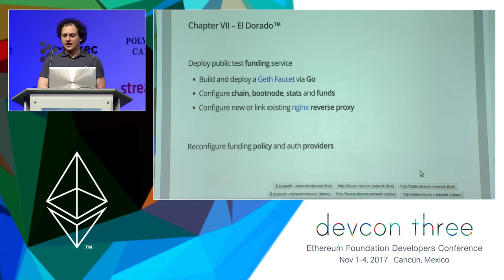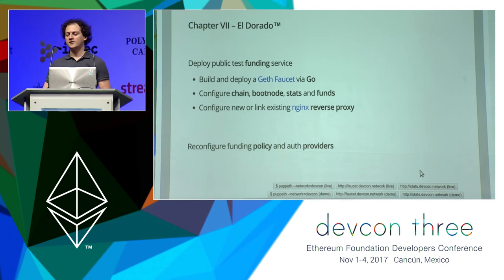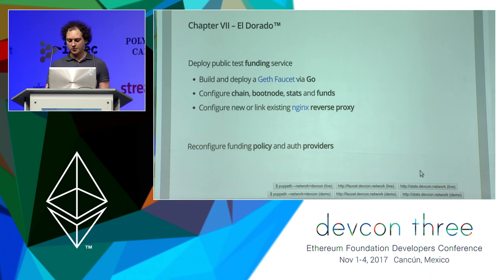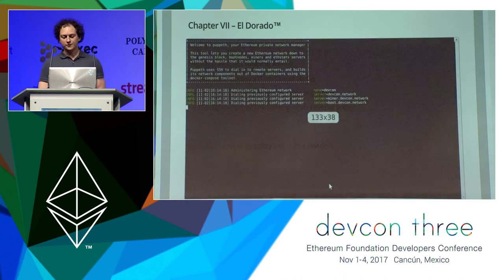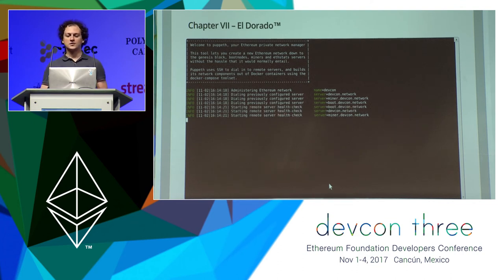Deploying all the components was easy enough. But if you share this with your friends, they'll say they want ether, and you'll be the one who has to give it to them all the time, which gets boring really fast. So we really need a faucet that just runs there and everybody can request ether. And to do that, GoEthereum has a faucet built in — or support for it — based on the light client. So let's ask Puppet to deploy that.